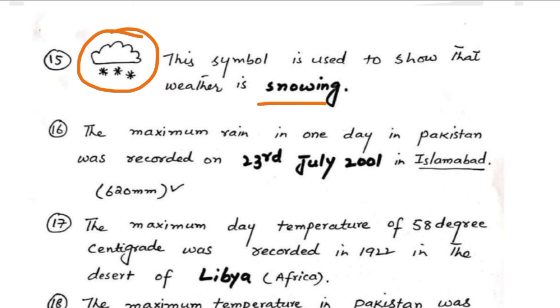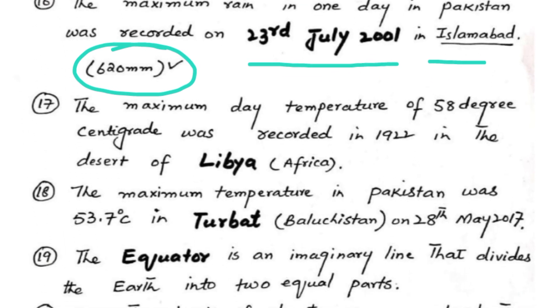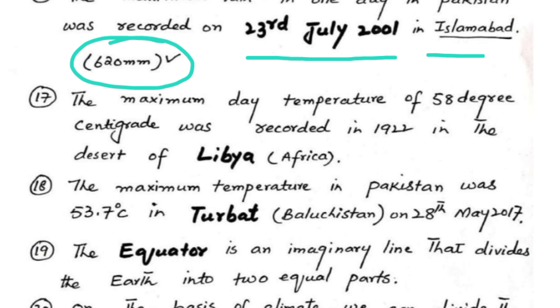The maximum rain in one day in Pakistan was on 23rd July, which was 620 millimeters.